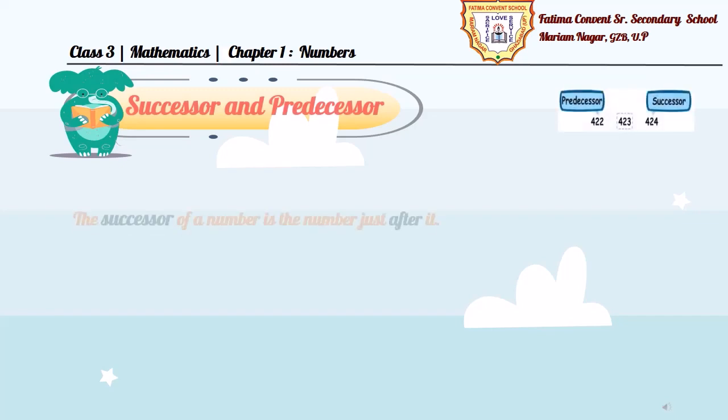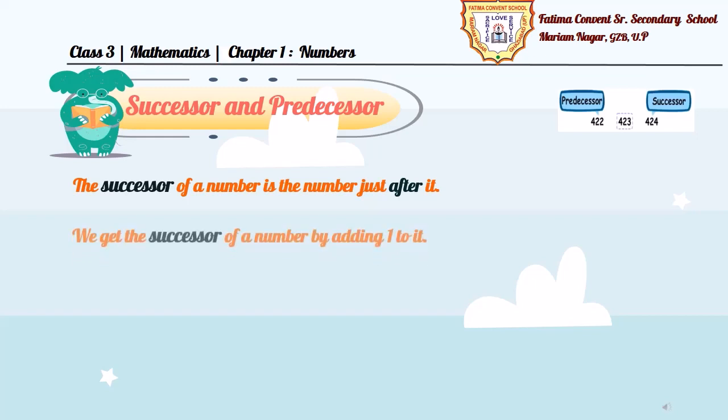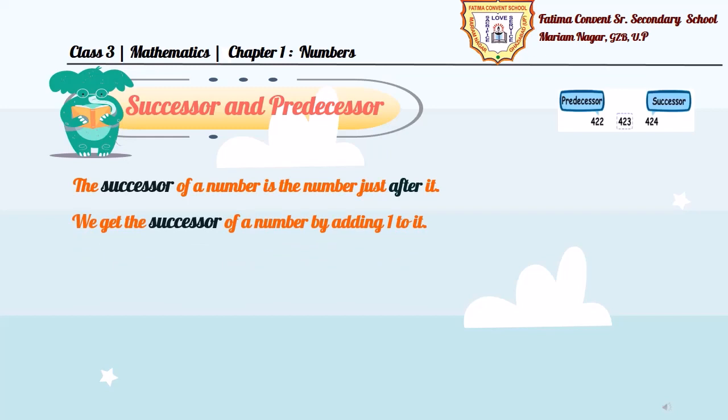Children, welcome to your next topic, successor and predecessor. The successor of a number is the number just after it. We get the successor of a number by adding 1 to it.